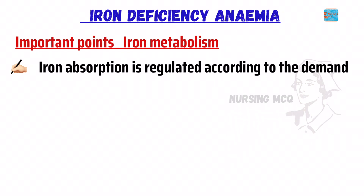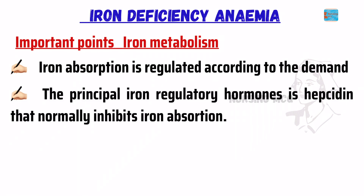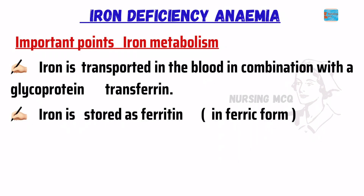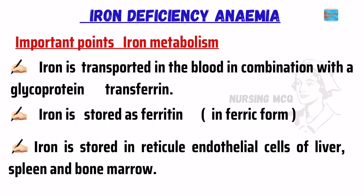Iron absorption is regulated according to the demand. The principal iron regulatory hormone is hepcidin, which normally inhibits iron absorption. Iron is transported in the blood in combination with a glycoprotein transferrin. Iron is stored as ferritin in ferric form, in reticuloendothelial cells of the liver, spleen, and bone marrow.